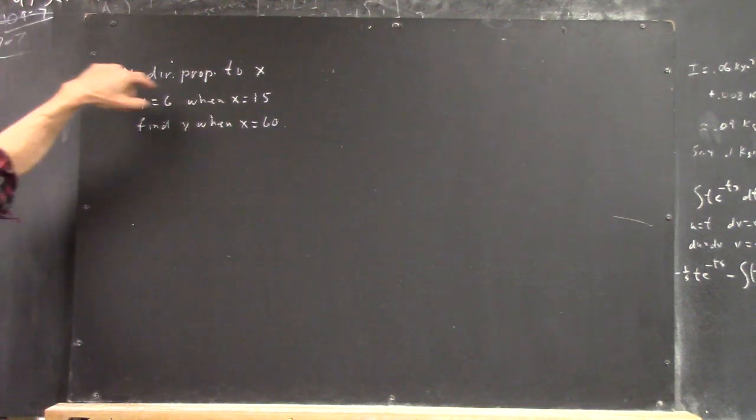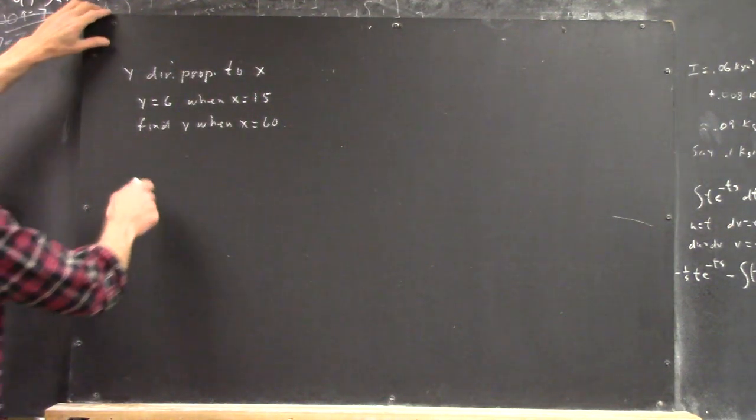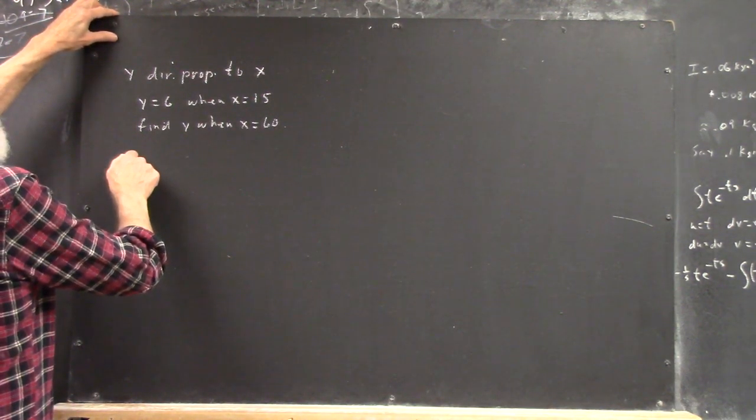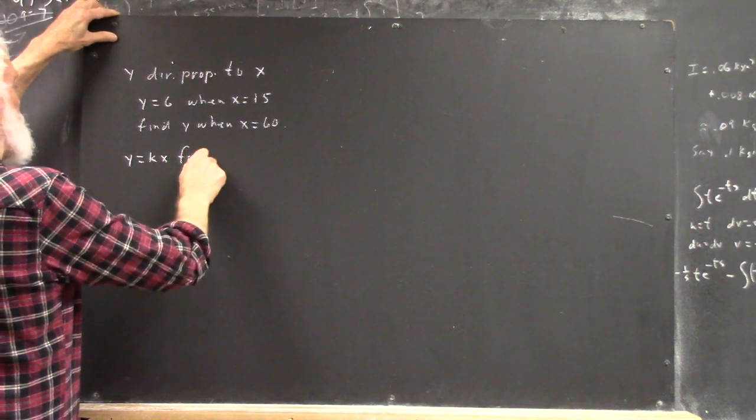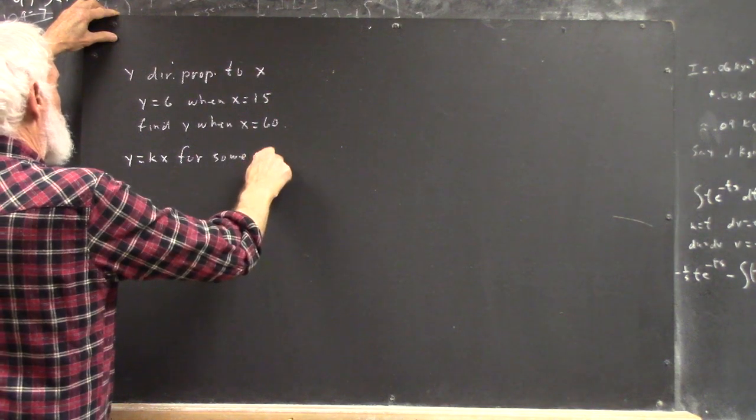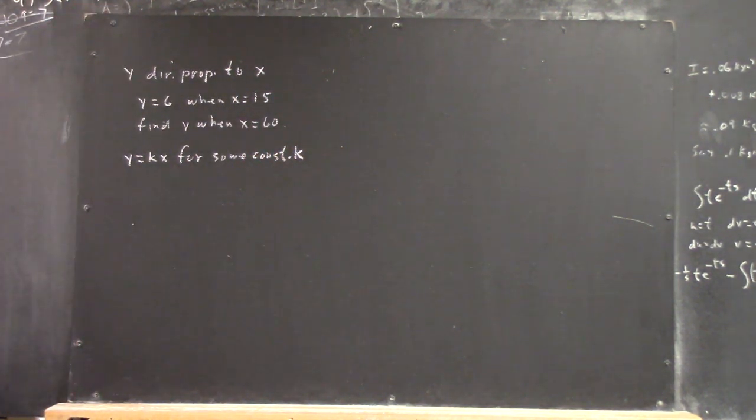What does it mean for y to be directly proportional to x? Well, I'm not going to drag it out of you since I last did you. This means y equals kx for some constant k.